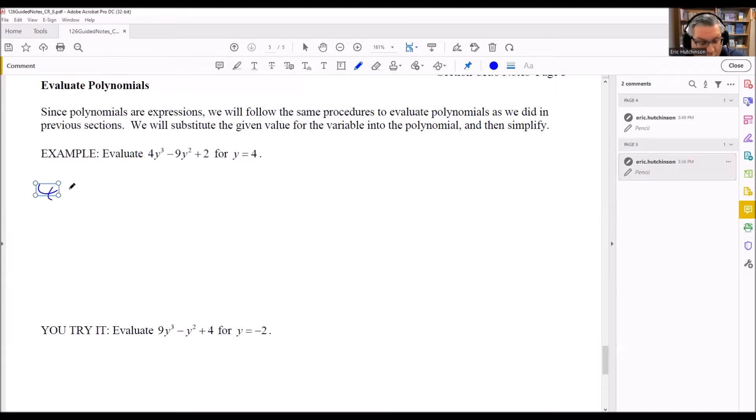So it means we need to do 4, and then instead of the y, we're going to replace it because it says y equals 4. Replace the y with a 4. We have minus 9. The y gets replaced by 4 here, so we have squared, and then we have plus 2. So all the y's got replaced by a 4.